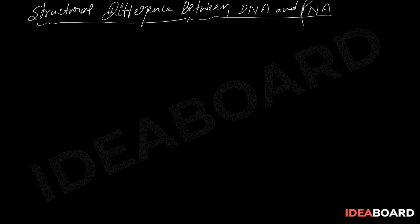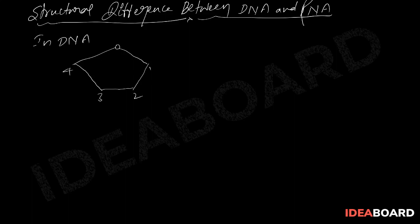In DNA, deoxyribose is present. Looking at positions 1, 2, 3, 4, and 5 of the pentose ring, at the 2nd position in DNA there is no oxygen — only hydrogen atoms are present.